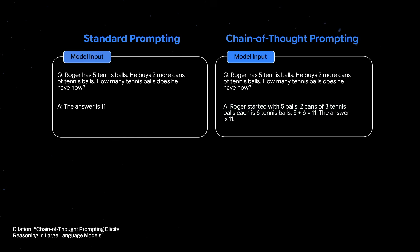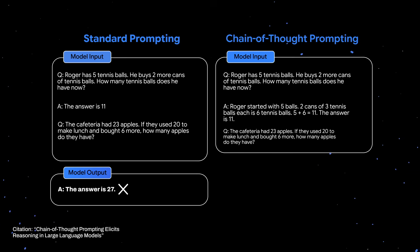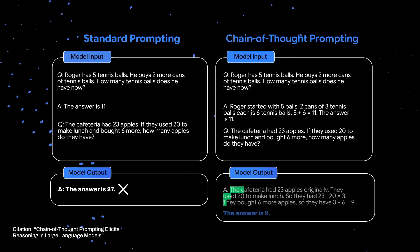Now, if we append to this few-shot prompt a new math problem, you'll see that on the left side, the model follows the pattern in the few-shot prompt and only outputs an answer. And it gets the math wrong. The cafeteria does not have 27 apples. But on the right side, when the model is prompted to generate the intermediate reasoning steps, highlighted in green, it correctly solves the math problem. The cafeteria has nine apples. In other words, when prompted to show its work, the model gets the answer right.